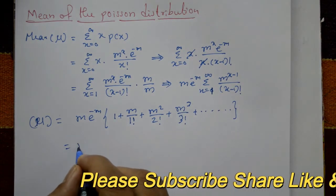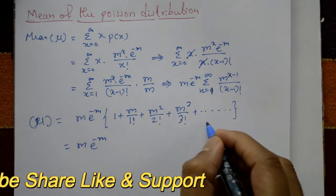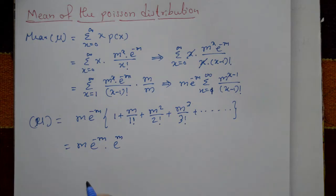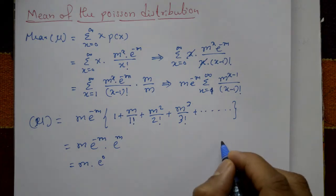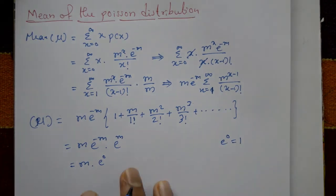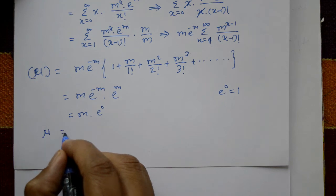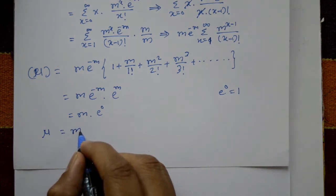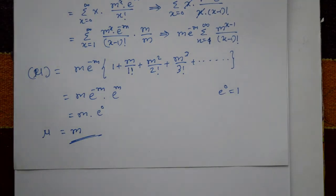The series 1 plus m plus m squared over 2 factorial plus m cubed over 3 factorial is recognized as e raised to m. Therefore, mu equals m times e raised to minus m times e raised to m, which equals m times e raised to 0 equals m times 1 equals m. The mean of the Poisson distribution is mu equals m.